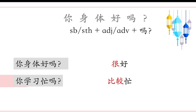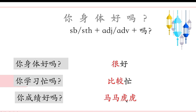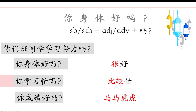马马虎虎 — just so-so, not good, not bad. And the final question: 你们班同学学习努力吗？The answer is 非常努力。Let's look at the structure of all the questions — they all end with 吗. Every sentence ends with 吗 to form a question.